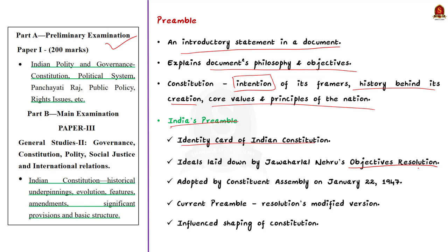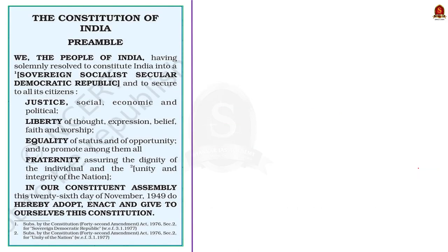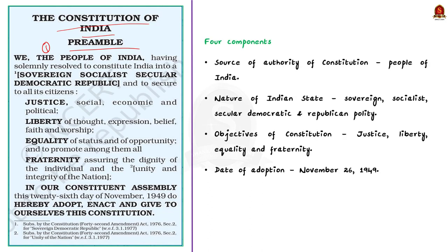Note that the resolution's modified version forms the preamble of the present Indian constitution. Now, just have a look at this image — this is the preamble of the Indian constitution. What all can you see in this? You can see that the preamble reveals four ingredients or components. Firstly, it reveals the source of authority of the constitution. The source is the people of India. This is what is clearly stated through the phrase 'We the people of India.' Before starting our discussion, have a look at the syllabus highlighted here for your reference.